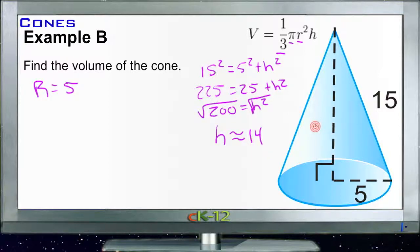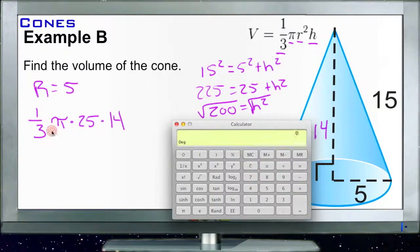Our height is about 14 units. Now we can plug that into our formula: one third of pi times r squared, so 5 squared is 25, times 14. Let's plug that in and run through the calculation.